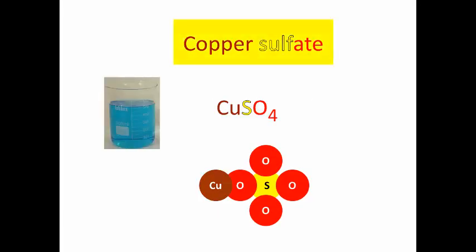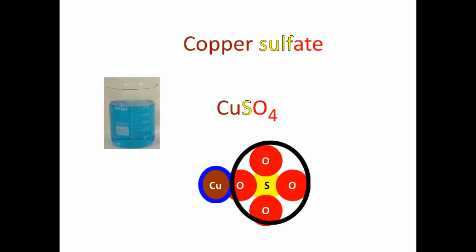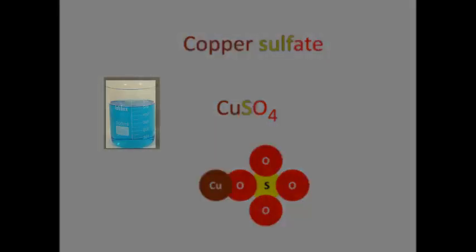So here we have copper sulfate. Copper's formula is Cu and then we have sulfate, SO4. Copper sulfate, CuSO4. Notice in the picture we have one copper atom bonded to this sulfate group, S and four O's. Copper sulfate is a blue substance.